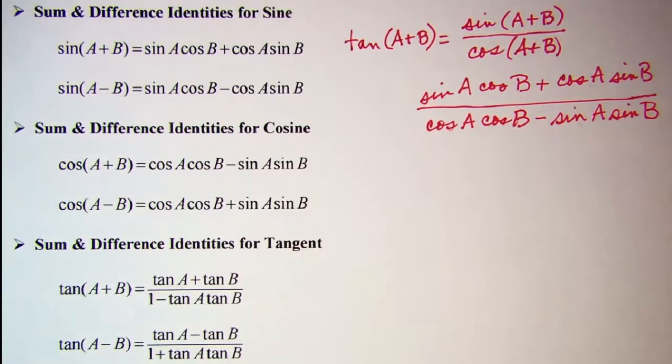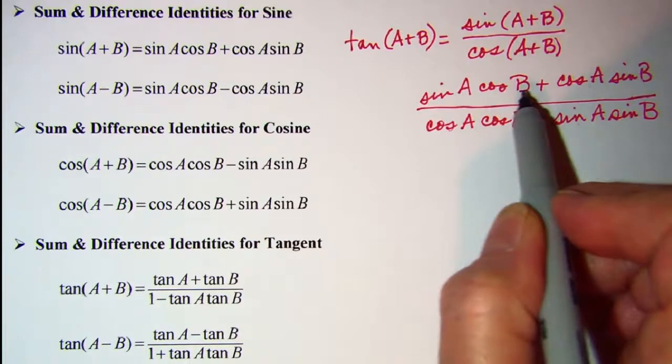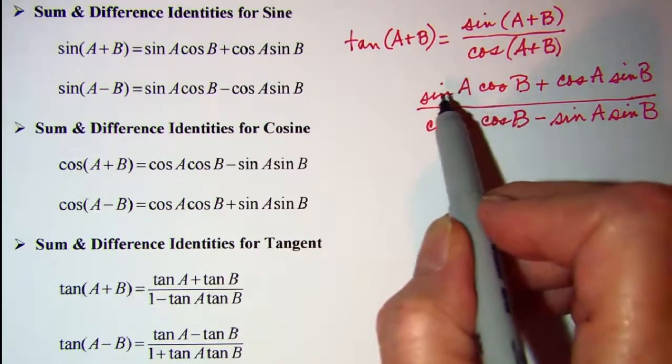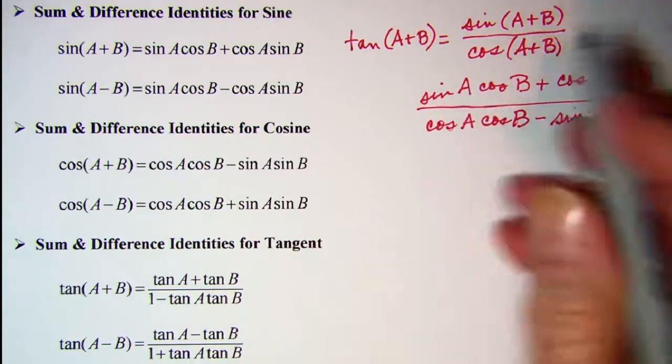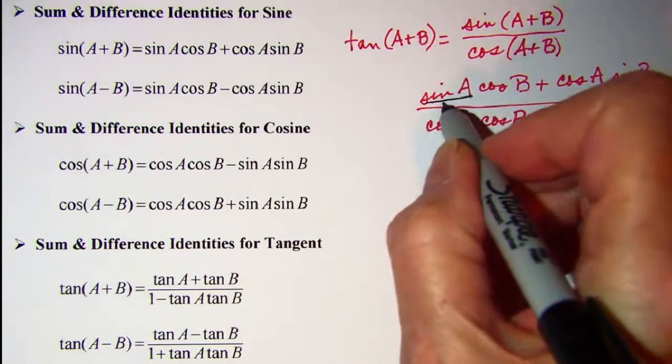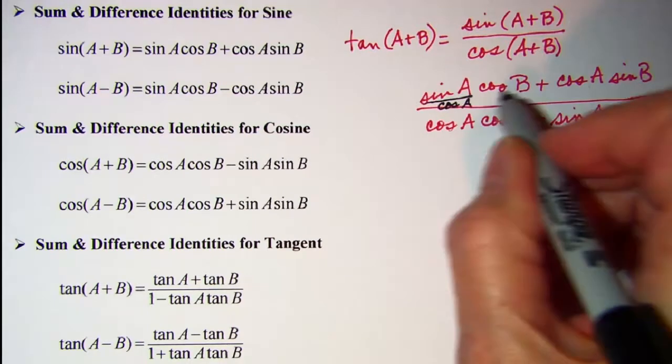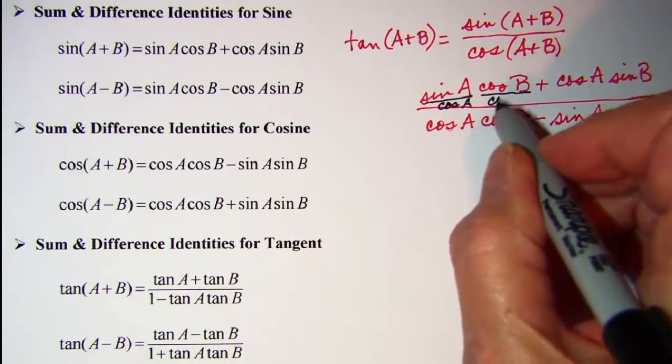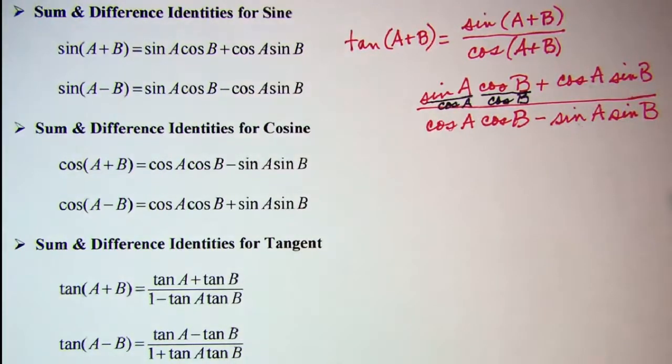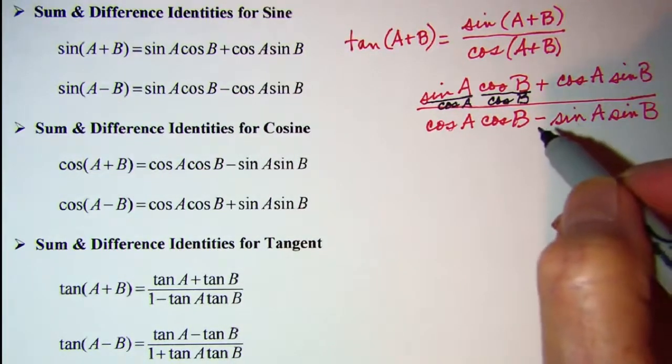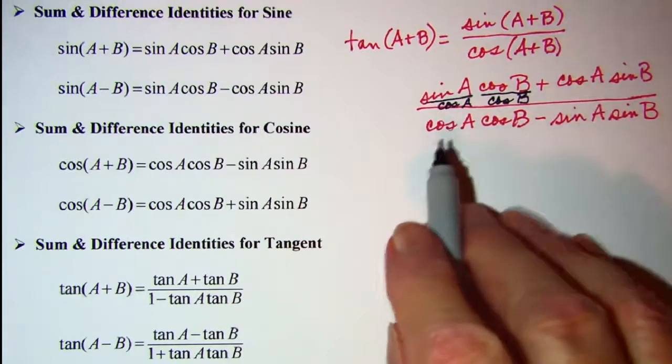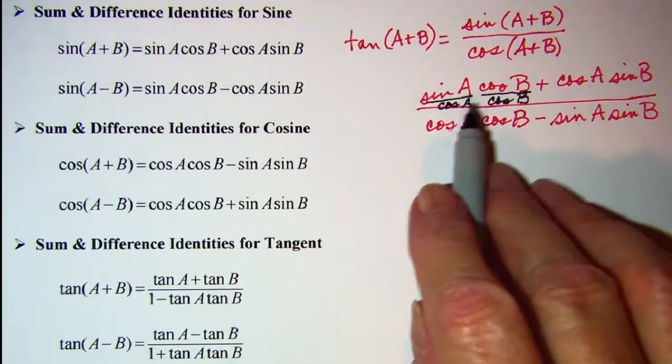And now what I want to do with this fraction is get tangents wherever I can. So looking at just this first term in the numerator, if I divide by the cosine of A, I'll get a tangent of A. And then I want to get rid of this, so I'll divide by the cosine of B. Now obviously you have to do that to every term in the numerator and the denominator so that you don't change the value. So we're going to divide every term by cosine A cosine B.